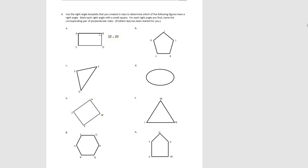Let's look at number four. Here you're looking for right angles in these different shapes. If you find them, you're going to indicate which pair of lines are perpendicular. This one's been started — it showed us one set of perpendicular lines. So we had AB perpendicular to BD forming the first right angle. We also have BD perpendicular to CD. We also have AC perpendicular to CD. And we also have AB perpendicular to AC.